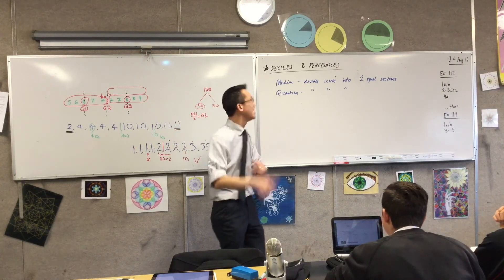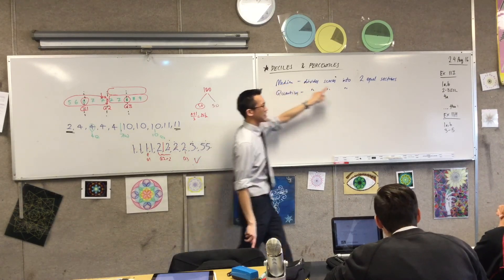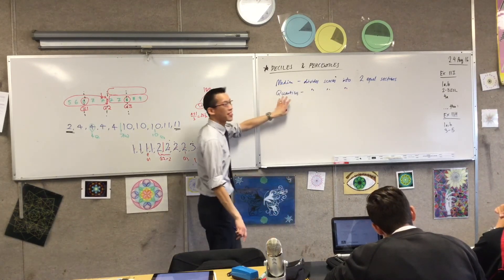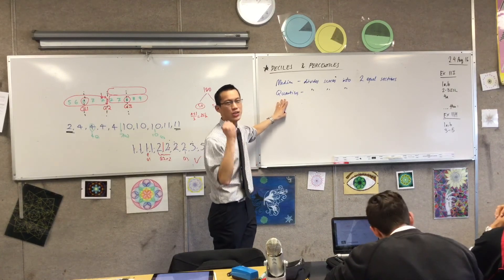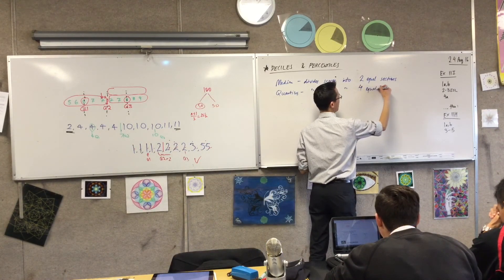Think about this: there's one median, which gives you two sections. There are three quartiles, which gives you four sections. Does that make sense? So four equal sections.